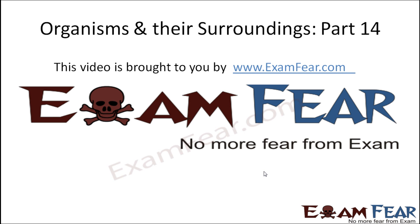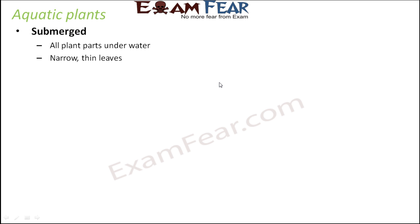Hello friends, this video on organisms and their surroundings part 14 is brought to you by examfew.com. Not only animals, there are huge varieties of plants which also live in water. We can classify the aquatic plants into three types. The first type is submerged plants — submerged means something which is present deep inside.